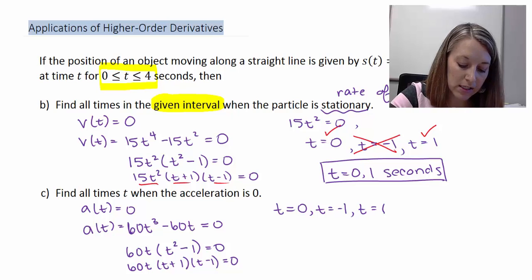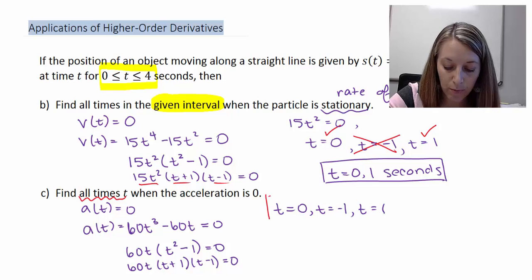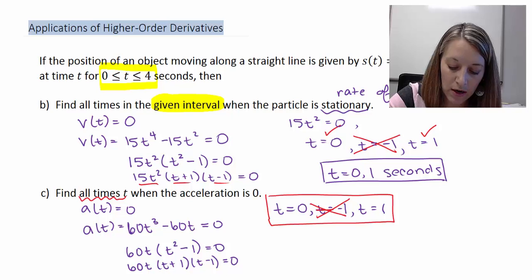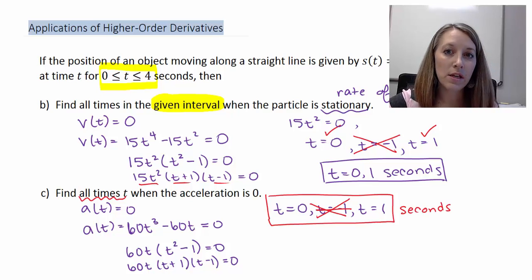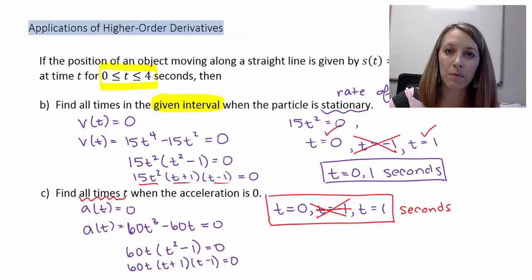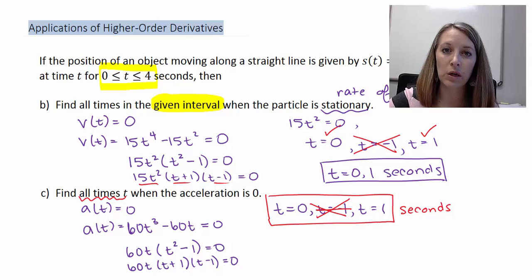Technically we should consider all solutions, but since negative time values are not valid in real-life applications, we get the same answers as Part B: t = 0 and t = 1. This is not what typically happens — we should not usually get the same answers for Parts B and C — but that's how it worked out for this example. This shows an actual application of why you might need a second derivative: to find the acceleration equation.